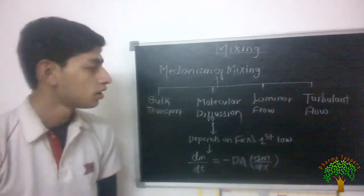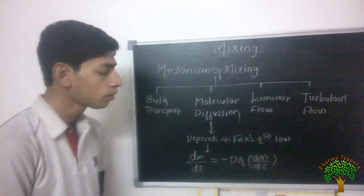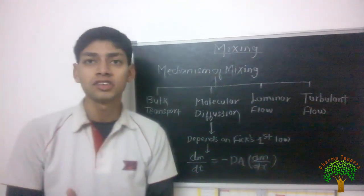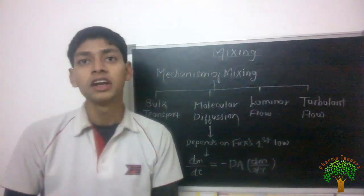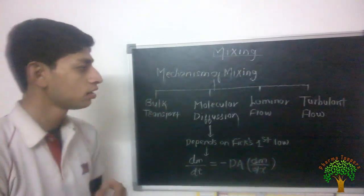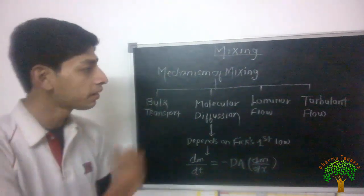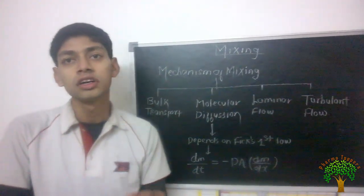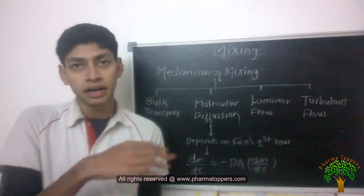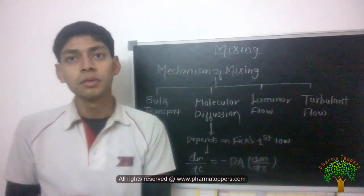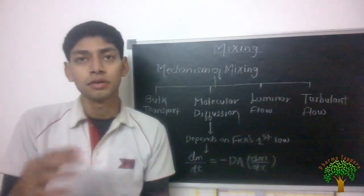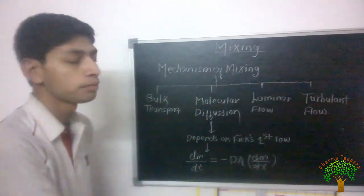Now fourth one is turbulent flow. Turbulent flow is a randomized fluctuation in the velocity of the liquid, and due to that the velocity of liquid will be very high. Due to that, mixing will occur due to the difference in velocity. Higher difference and lower difference will be mixed to each other and form the uniform mixture, and mixing can happen.